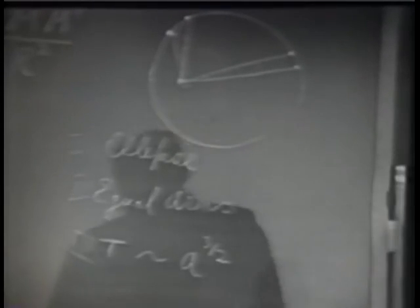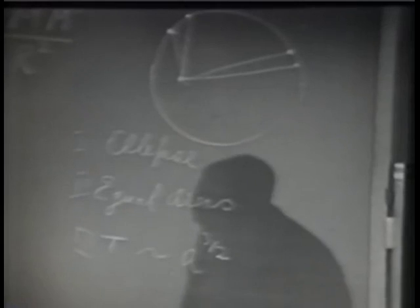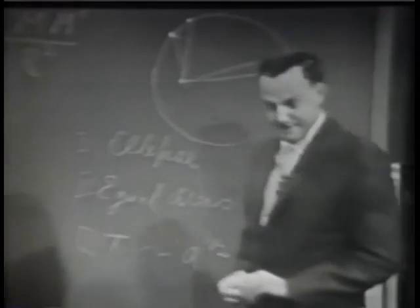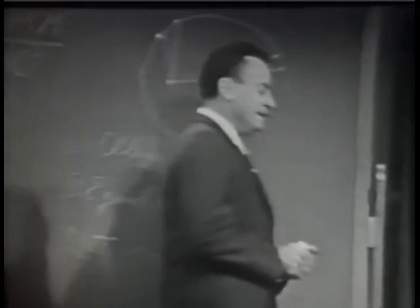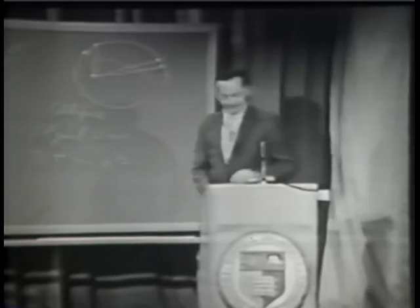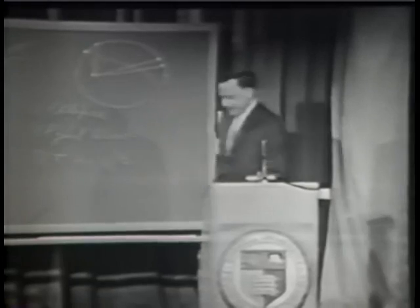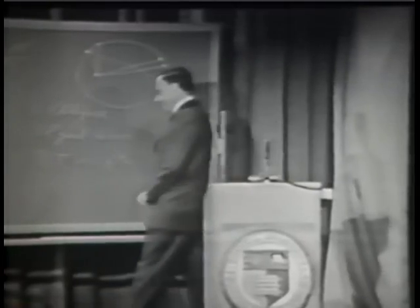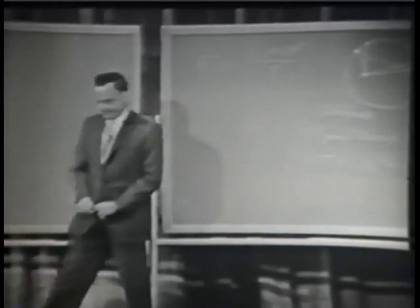Kepler provided a very complete description of the motion of the planets around the Sun. The next question was, what makes them go around? How can we understand this in more detail, or is there anything else to say? In the meantime, Galileo was investigating the laws of motion.